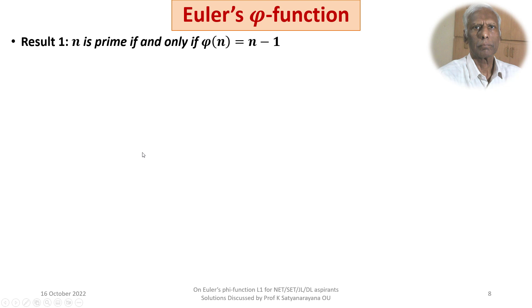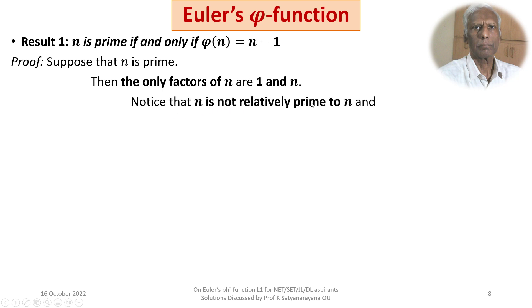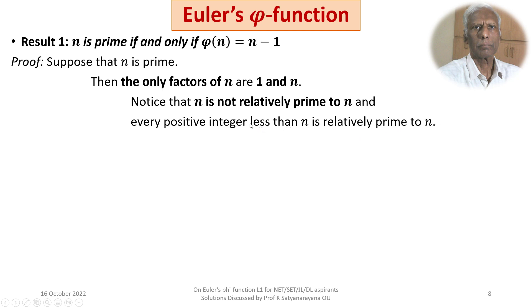We now prove Result 1: n is prime if and only if phi(n) = n − 1. The formula phi(p) = p − 1 is well known. Proof: Suppose n is prime. The only factors of n are 1 and n. Note that n is not relatively prime to n since gcd(n, n) = n ≠ 1. Every positive integer less than n is relatively prime to n, since n is prime. Therefore phi(n) = n − 1.